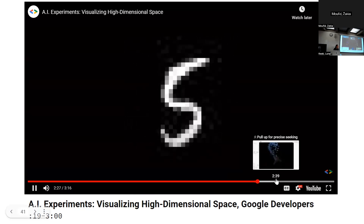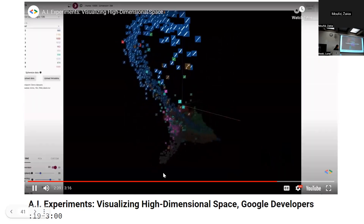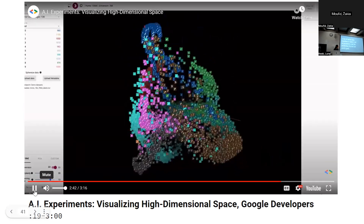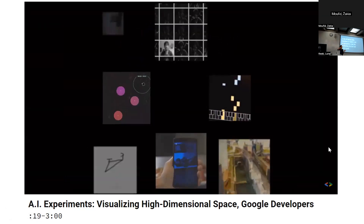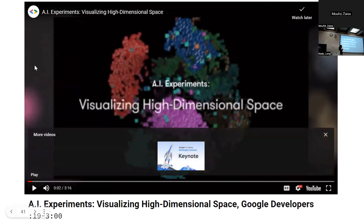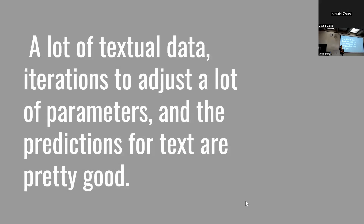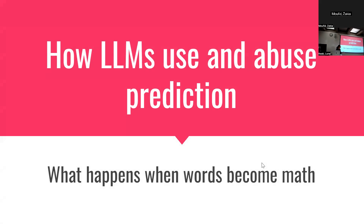To summarize how LLMs work: there's a huge amount of textual data, there are iterations to adjust a large number of parameters, and the predictions for text end up being pretty good once you have a lot of data and a complex model with all those parameters. That's basically where we are now with GPTs. Now: how do large language models use and abuse prediction?